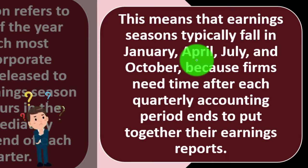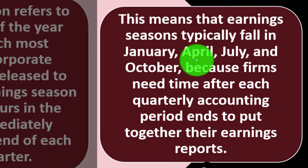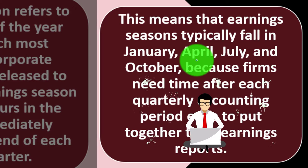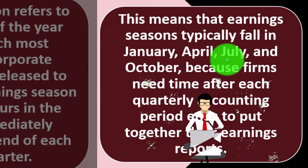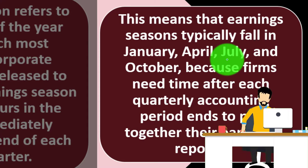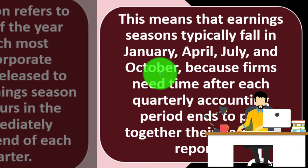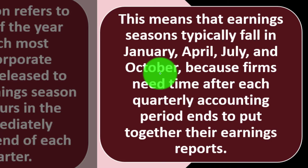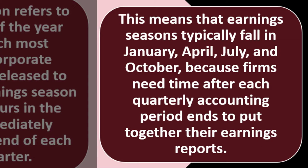The first quarter — January, February, March — gets compiled and released to the public in April. The second quarter — April, May, June — is issued to the public in July. The third quarter — July, August, September — is compiled and published in October. The fourth quarter — October, November, December — is compiled and given to the public in January of the following year.